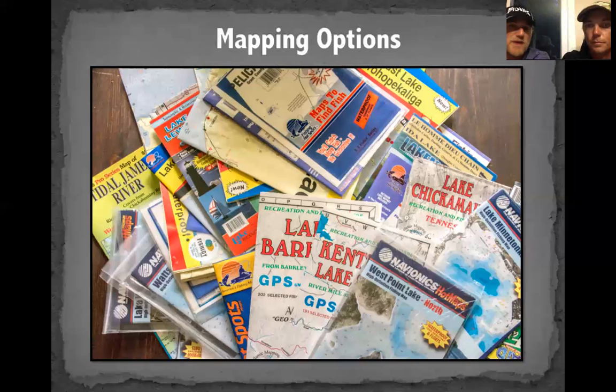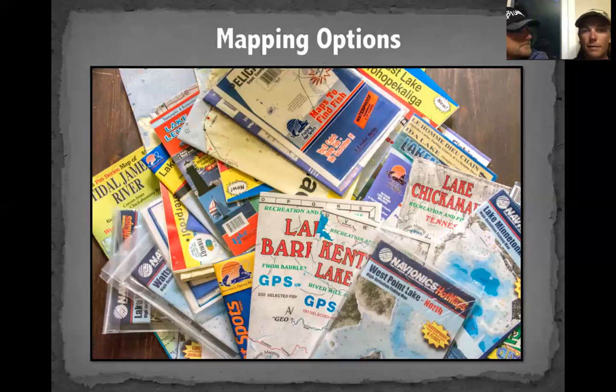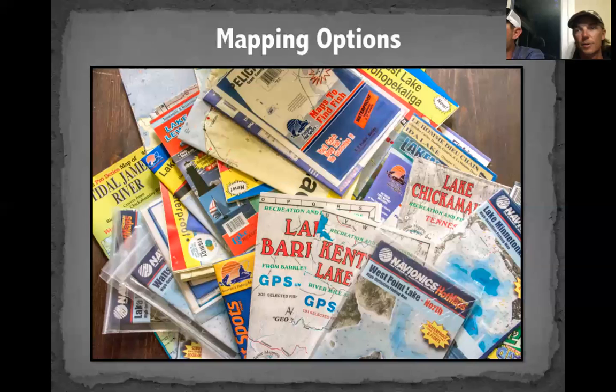Paper maps go with me again and again wherever I go. You can sometimes get old data you can't get on today's newer maps — old cities, road beds, stuff like that. A paper map isn't a really solid structure map — it'll show you general things like a large hump, but not the intricate points and turns. It's good for the big picture: sections of the lake, transition routes fish use to get from shallow to deep.